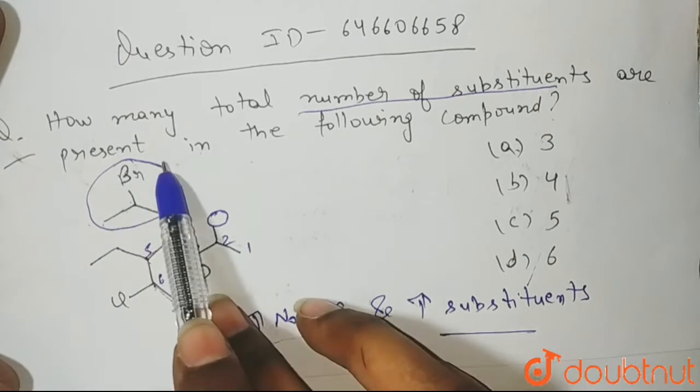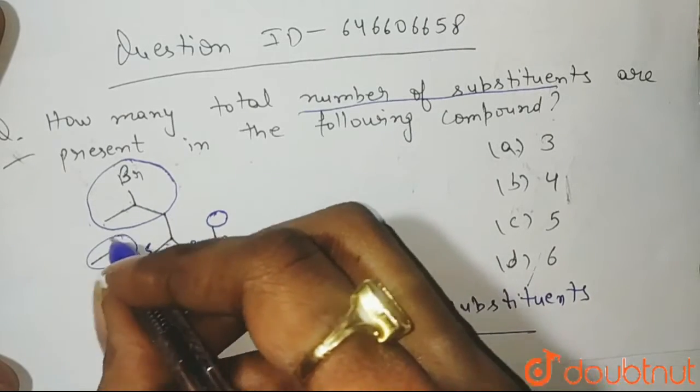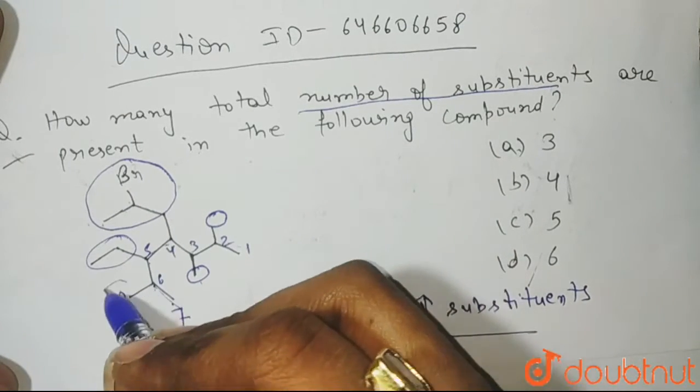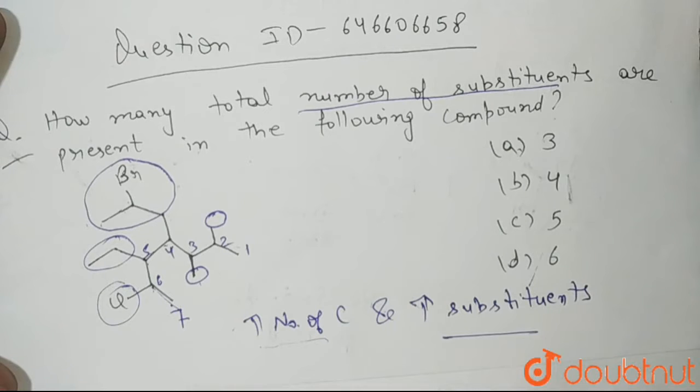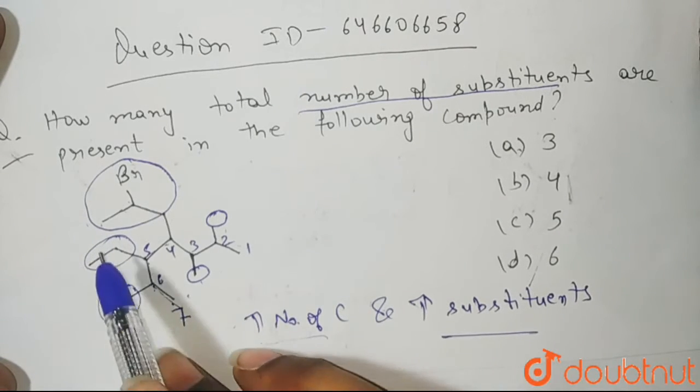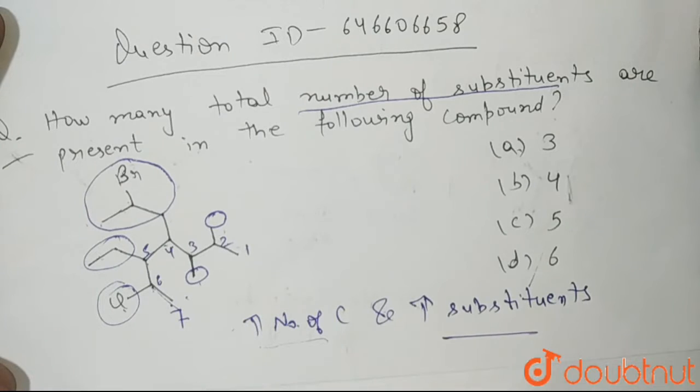Then the substituents are how many? There are 1, 2, this is 3, this is 4 and this is your 5. Cl and Br are also substituents. So how many substituents are present? 1, 2, 3, 4 and 5. 5 substituents are present.